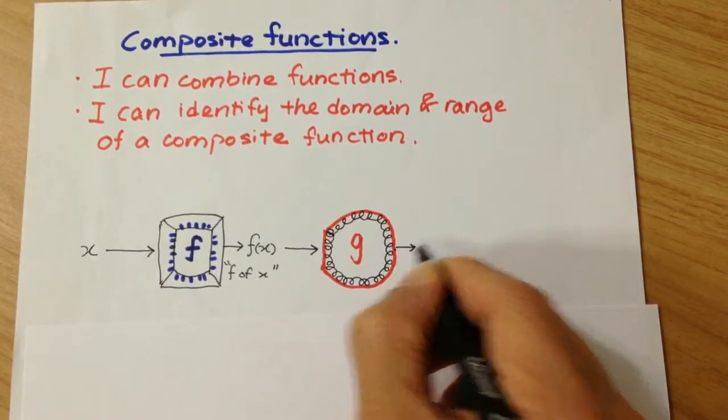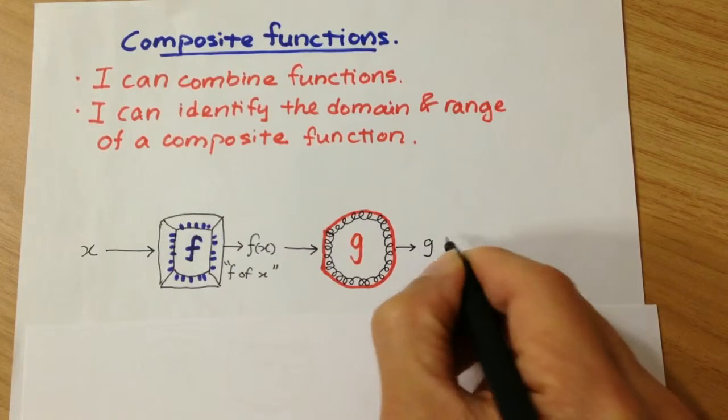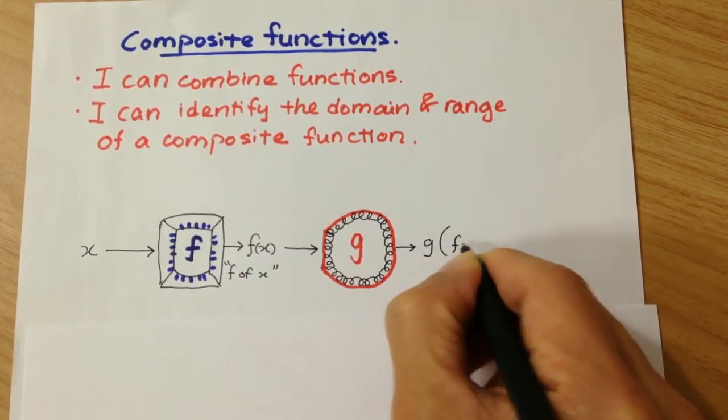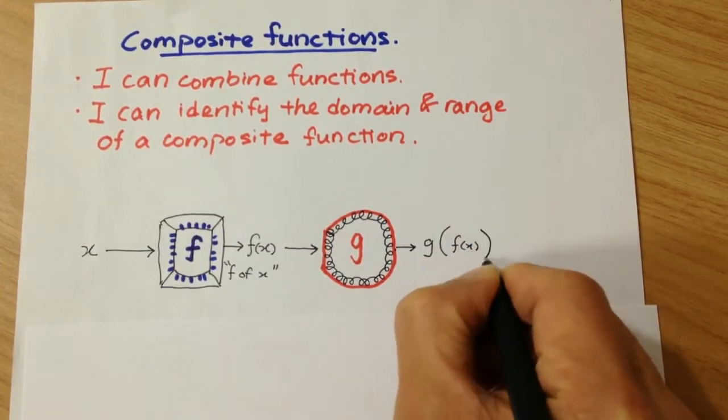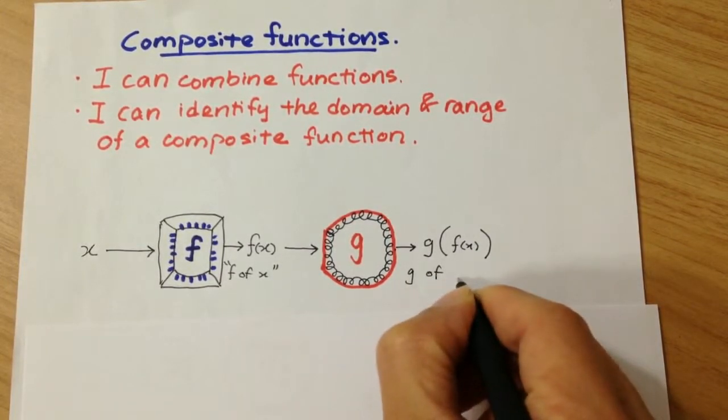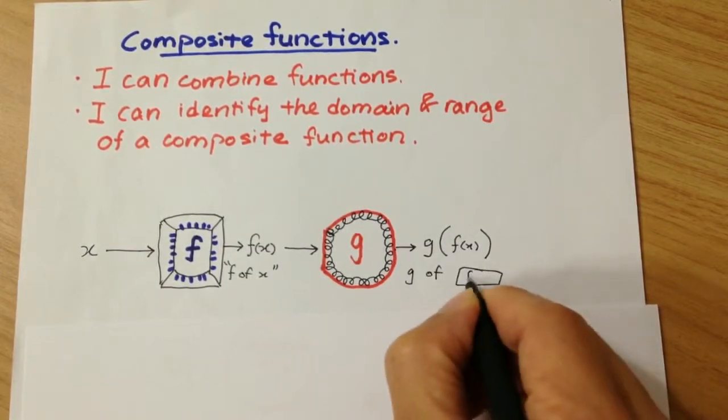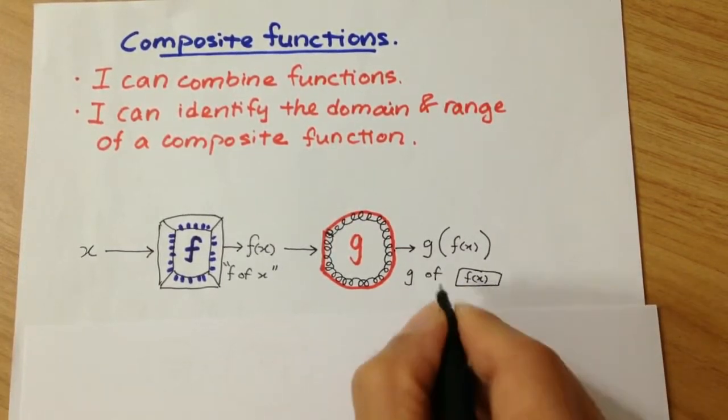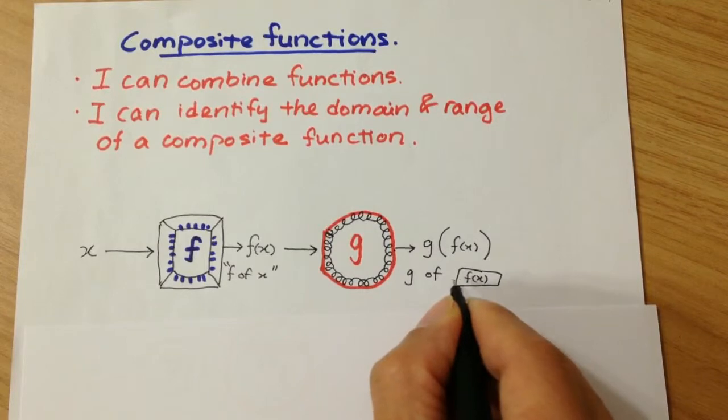And we get another output. This time is going to be g, big bracket, f of x. So this is g of whatever that goes inside, g of the input. And the input here is f of x. So this is read as g of f of x.